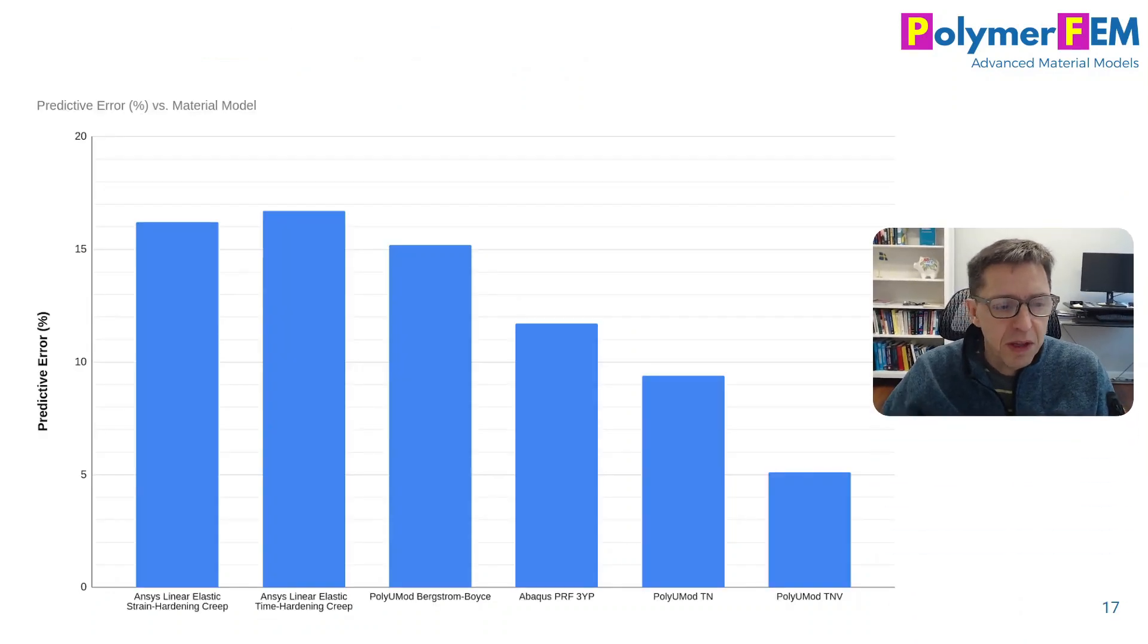So to summarize, here's the predicted error as a function of the different models we looked at. The creep model is not good. The Bergstrom-Boyce model is not so good. I would almost say that the PRF model is not good enough here either.